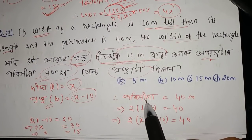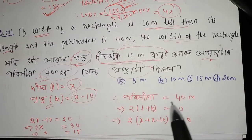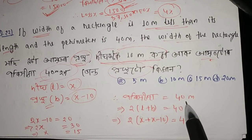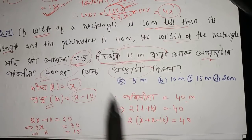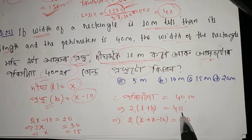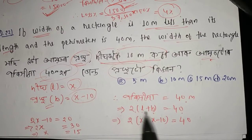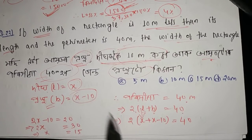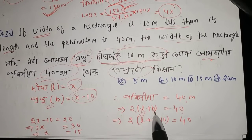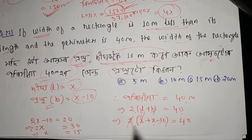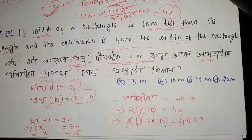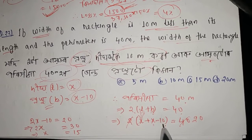The perimeter is 40 m. The perimeter of a rectangle is 2 × (length + width). So 2(x + x − 10) = 40. The length is x, the width is x − 10. Solving: 2(2x − 10) = 40, so 4x − 20 = 40, giving x = 15. Therefore the distance x is 20.